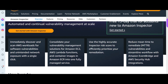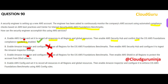Option D is the same as the correct option except that instead of Security Hub, it says we will enable Inspector. Inspector has no role here, as already explained. Inspector catches thieves — it will not work like Security Hub does.